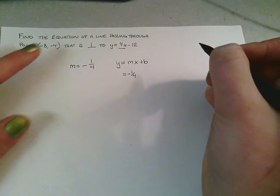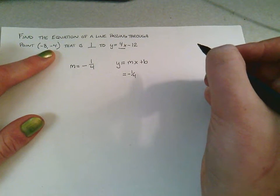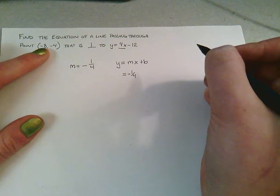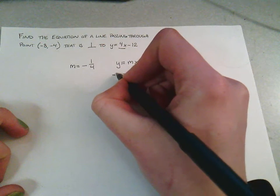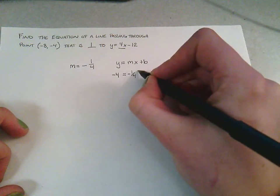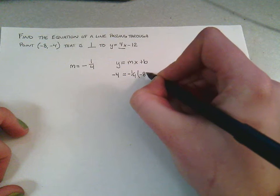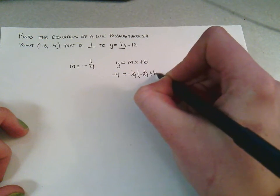We also have a point up here, (-8, -4). We can plug that in for x and y, respectively. So we'll have -4 = (-1/4)(-8) + b.